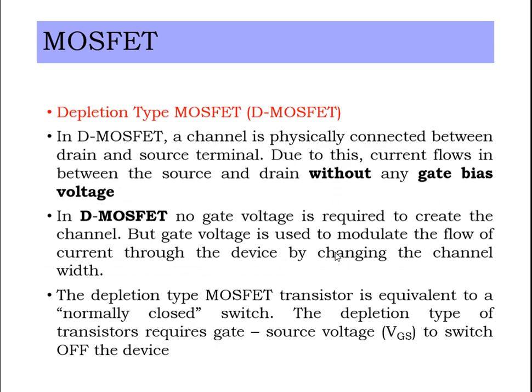In a Depletion Type (DE) MOSFET, a channel is physically available between the drain and source terminals. Therefore, current flows between source and drain without any gate bias voltage — no gate voltage is required to create the channel. The gate voltage is used to control the flow of drain current by changing the channel width.